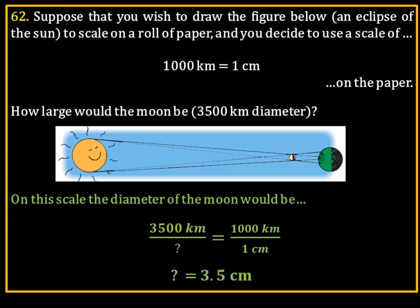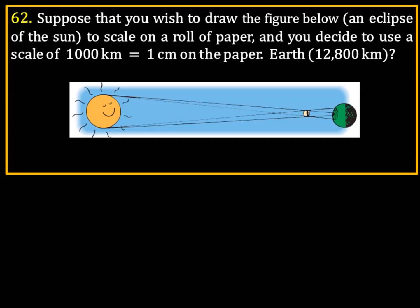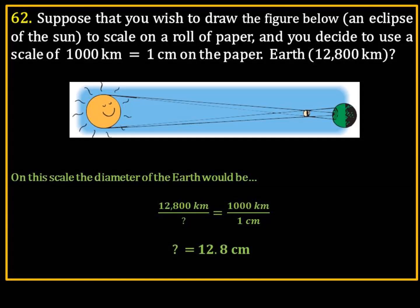The next problem we want to tackle is the diameter of the Earth, which is 12,800 kilometers. So, the question is, how large of a scale model will we draw in centimeters if the Earth is 12,800 kilometers in diameter? We'll set up the exact same ratio: 12,800 kilometers over question mark equals 1,000 kilometers over one centimeter. 1 times 12,800 divided by 1,000, and the answer is going to be 12.8 centimeters.